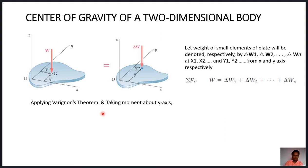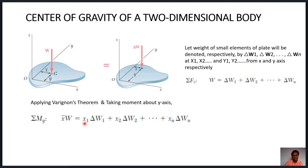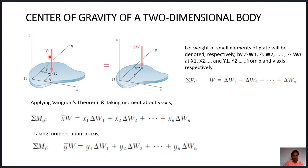Taking the summation of moments about the y-axis, on the left-hand side we get W·x̄, and on the right-hand side the sum of elemental moments: x₁·δw₁ + x₂·δw₂ + and so on. Similarly, taking the moment about the x-axis, on the left-hand side we get W·ȳ, and on the right-hand side the sum of elemental moments about the x-axis. Using these two equations, we can easily locate x̄ and ȳ and thus find the center of gravity of the plate.